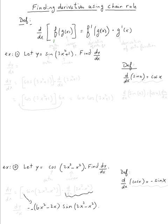So f here is the outer function. The derivative with respect to x of f of g of x is going to be f prime — which is the derivative of the outer function — of g of x. Nothing happened to g of x.